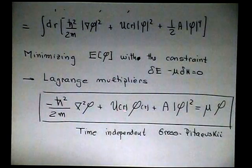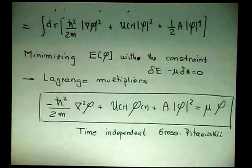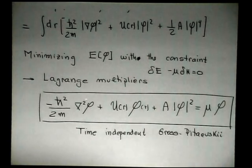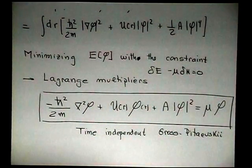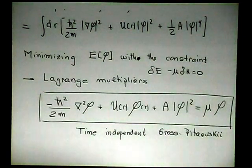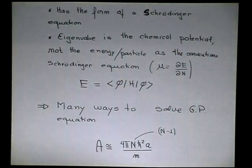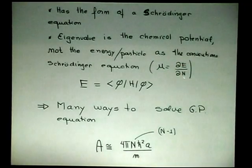And instead of treating this Hamiltonian, or instead of, forget about this term, and this will be the energy of your system. But because of this nonlinear term, the eigenvalue of the Gross-Pitaevskii is the chemical potential. If there is no interaction, of course, E is equal to n times mu.